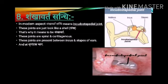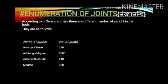Sankhavarta Sandhi: In the modern aspect, Sankhavarta Sandhi means incudostapedial joint. These joints are just like a shell i.e. Shankha, that's why it is known as Sankhavarta Sandhi. These joints are spiral and cartilaginous, and are present between the incus and stapes of the ears, ending at the Shrugatakabhaga.